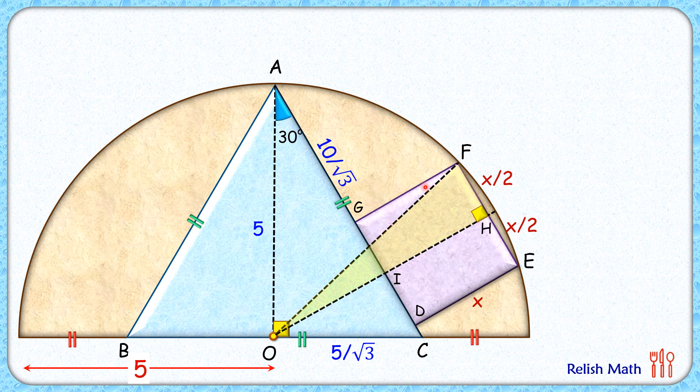Now in this triangle OFH, we have FH is x by 2. How about OF length? OF is the radius of the semicircle and thus it is 5 centimeters. Now here in OH, if we check only IH, IH is x centimeters, that's the side length of the square.